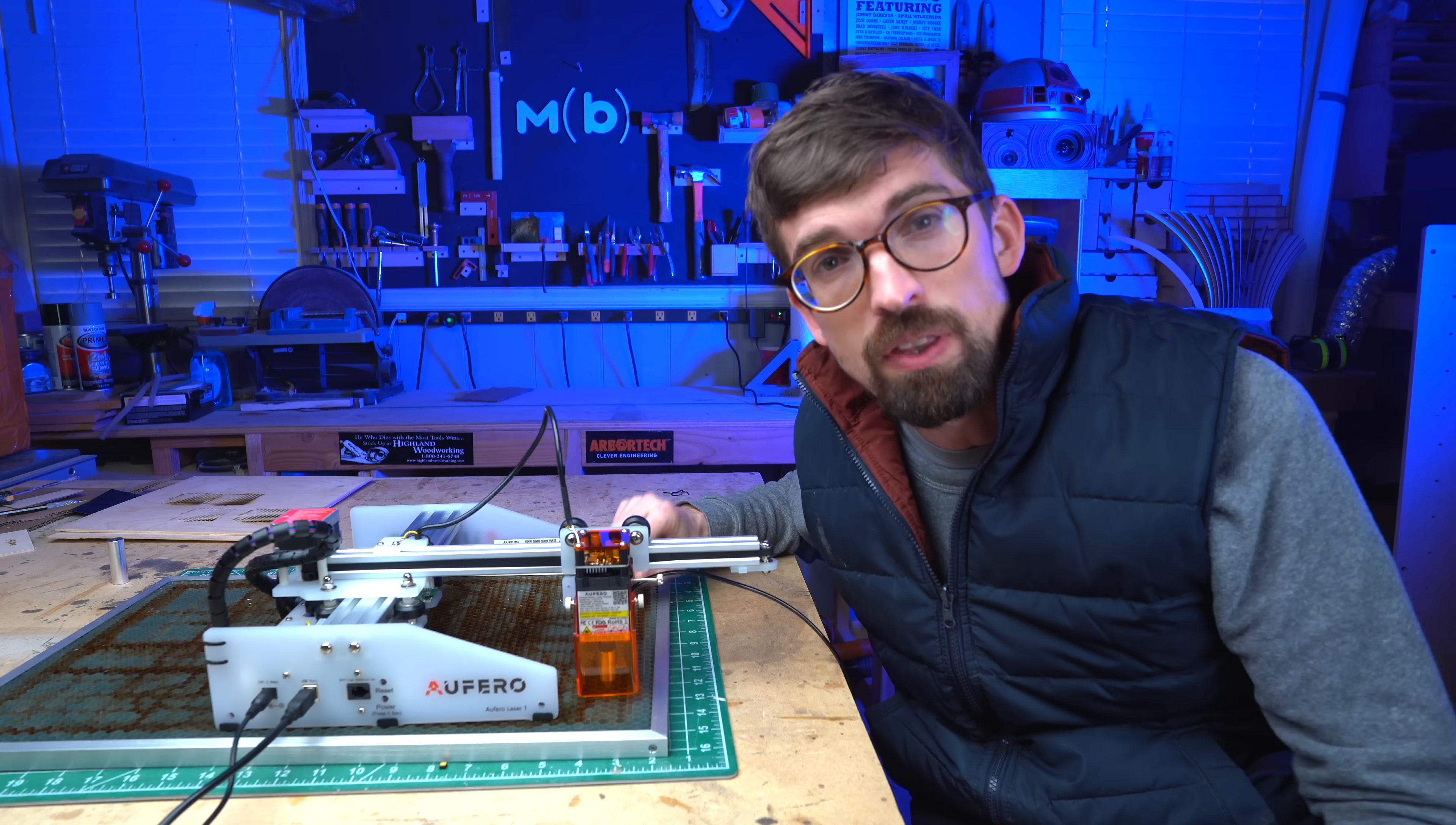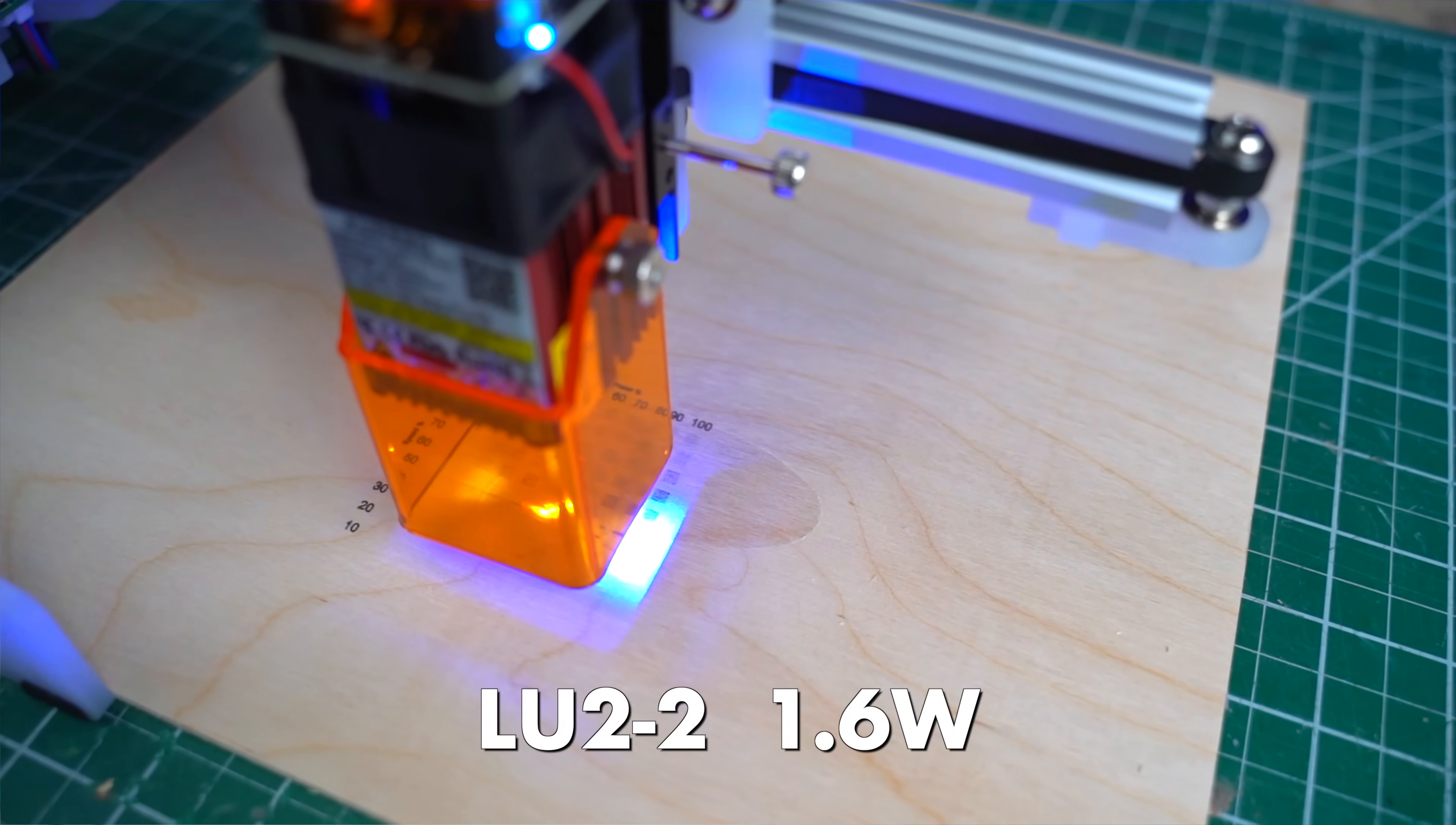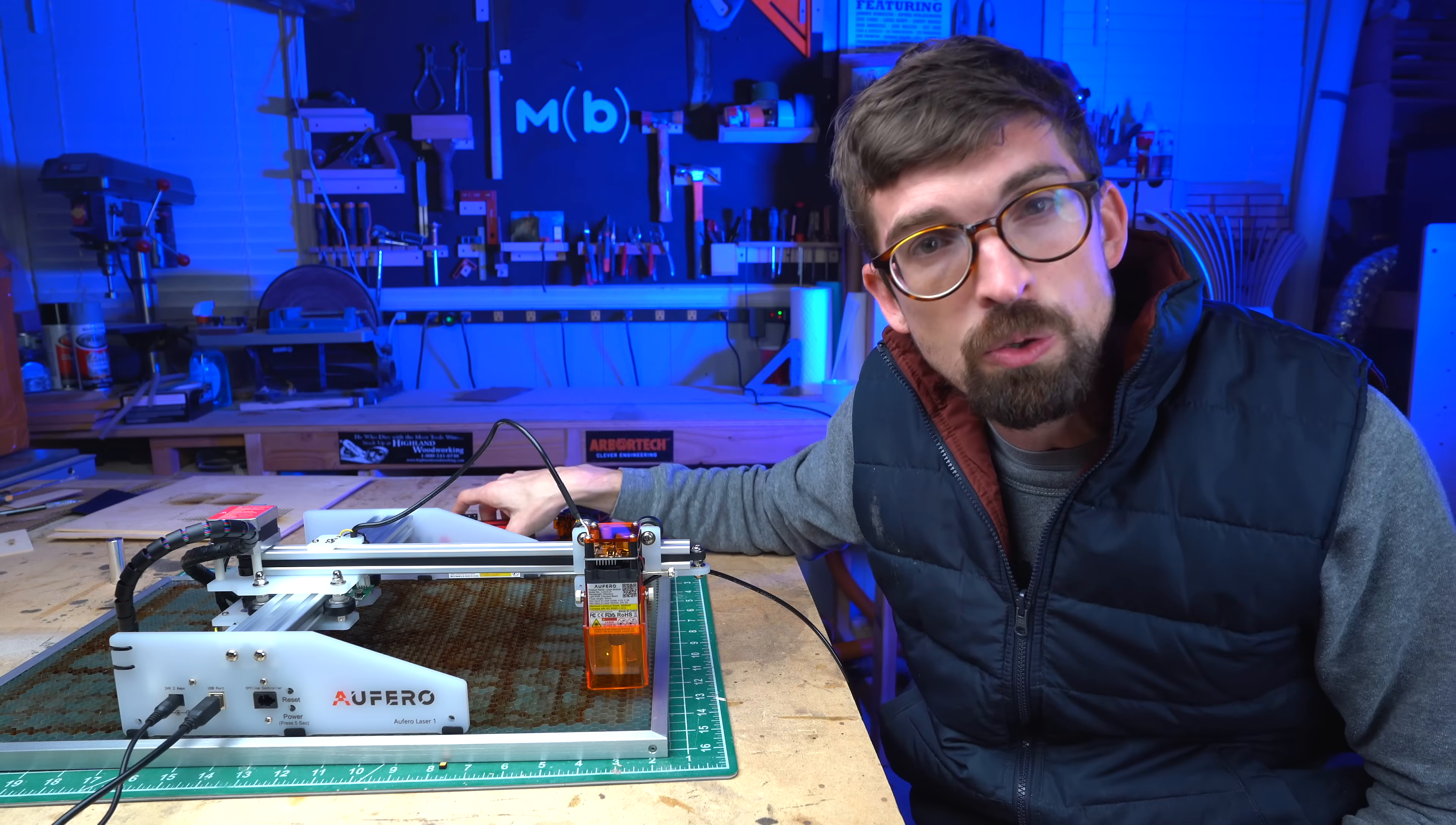We're going to be trying out three different versions of the laser module. This is actually the one I'm most excited about. But there are two other versions that you could get with it. So this is the laser that comes standard with the machine. This is the LU2-2. This is I think a 1.6 watt laser. This one's actually really nice because it has a really small laser dot, meaning that you're going to be able to get really fine engravings. You're just not going to have a ton of power with this. So you're definitely not going to be doing any cutting.